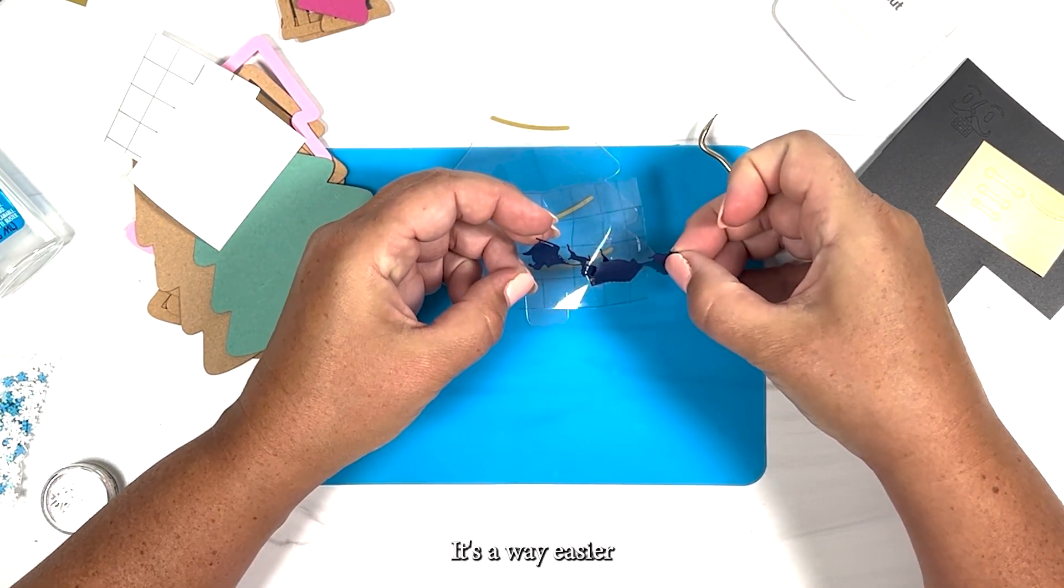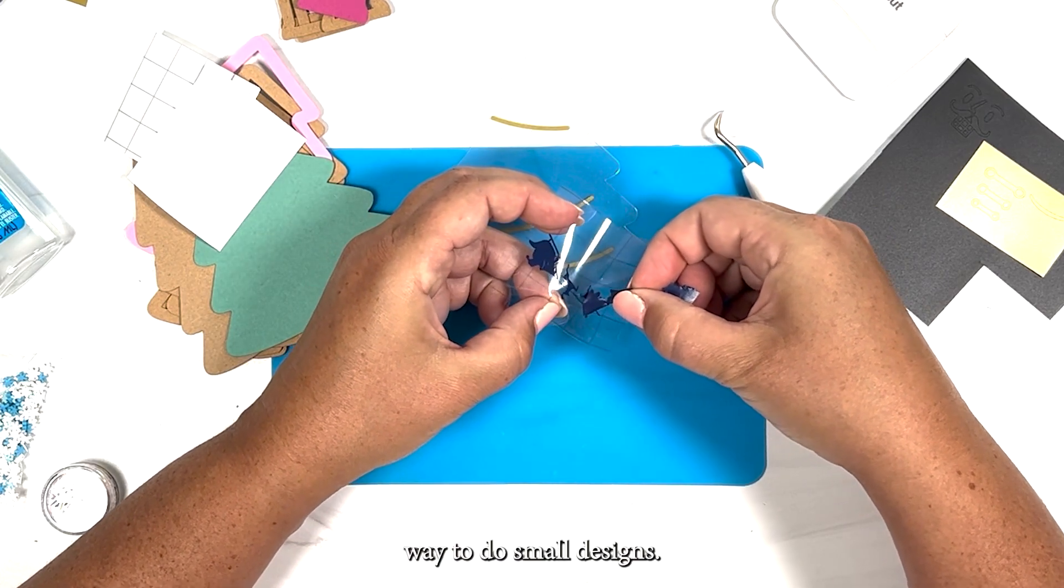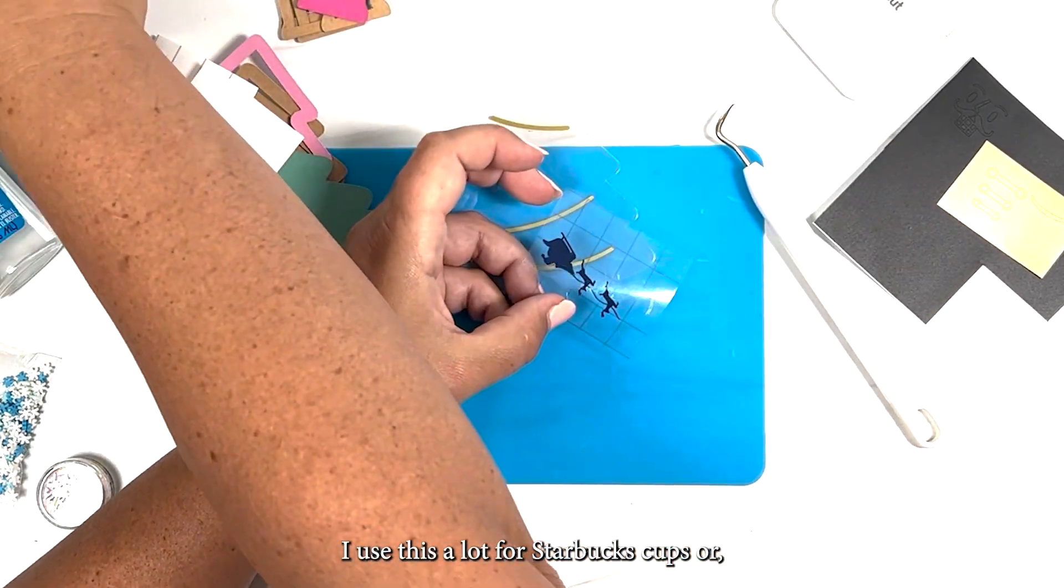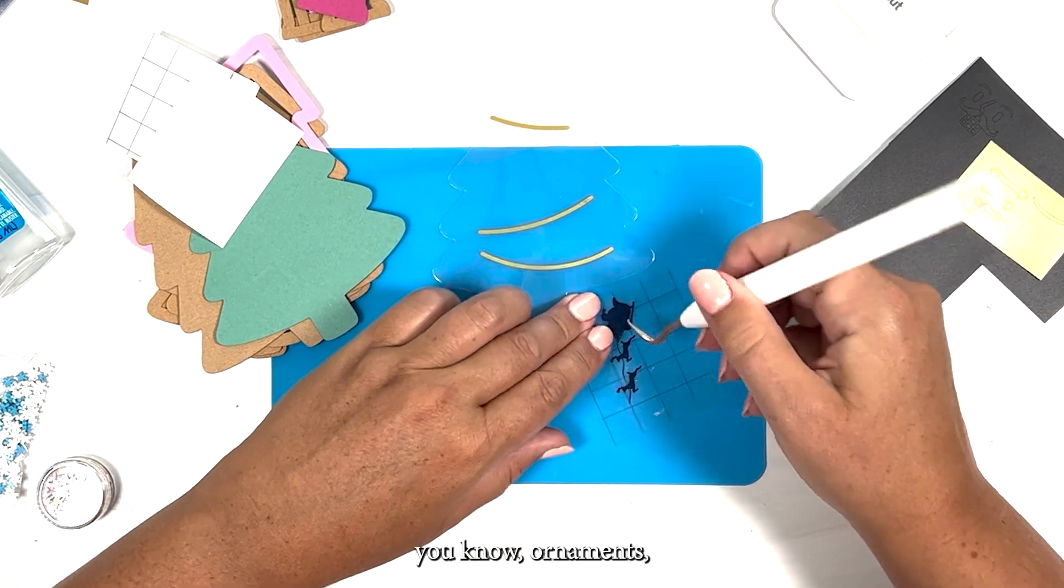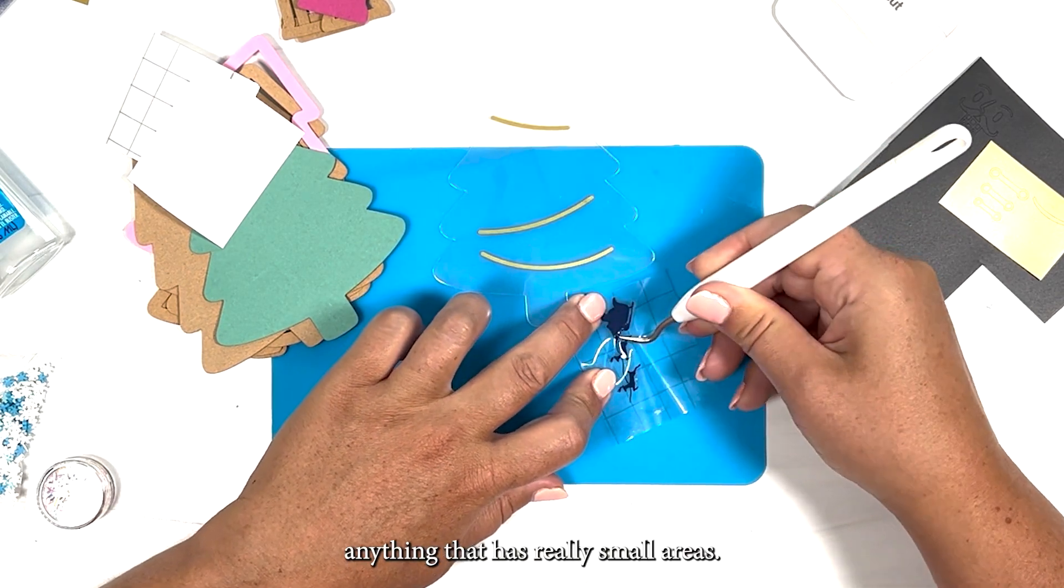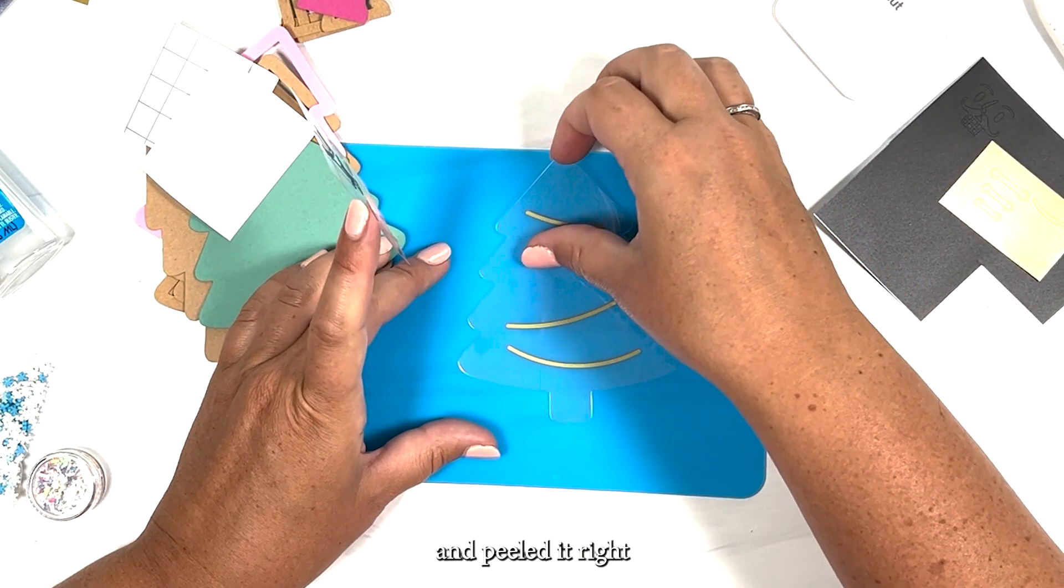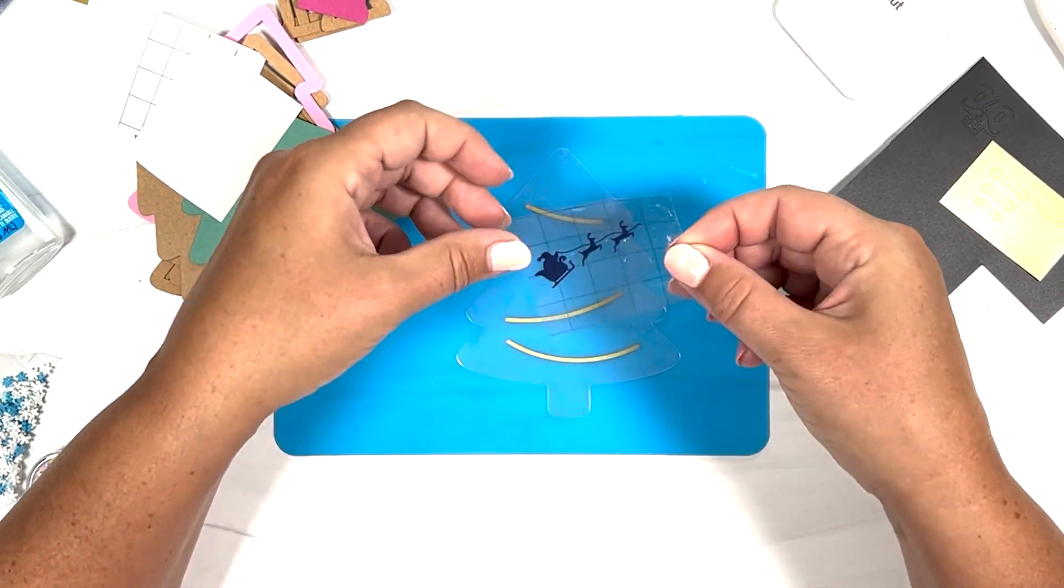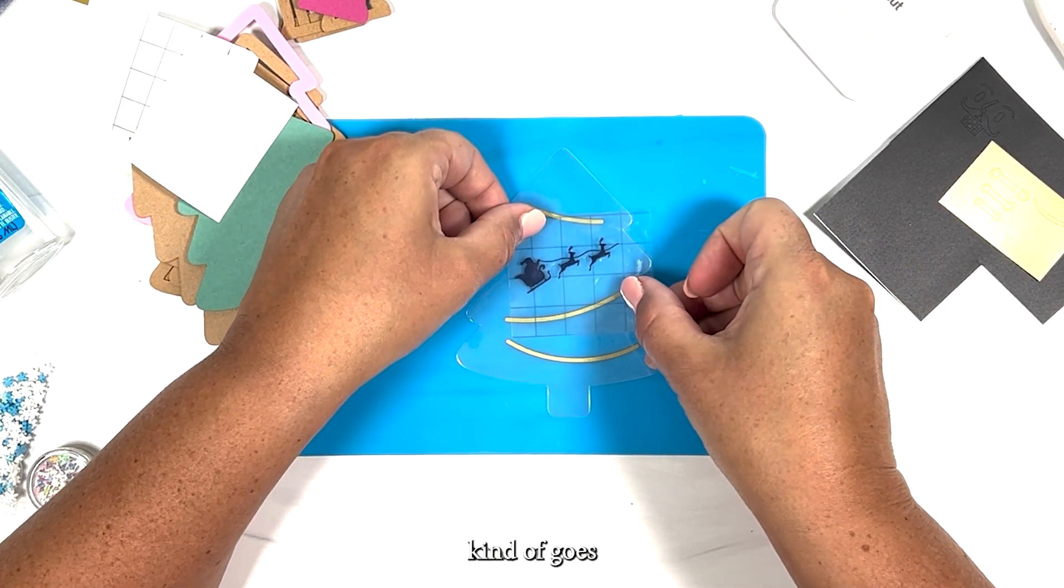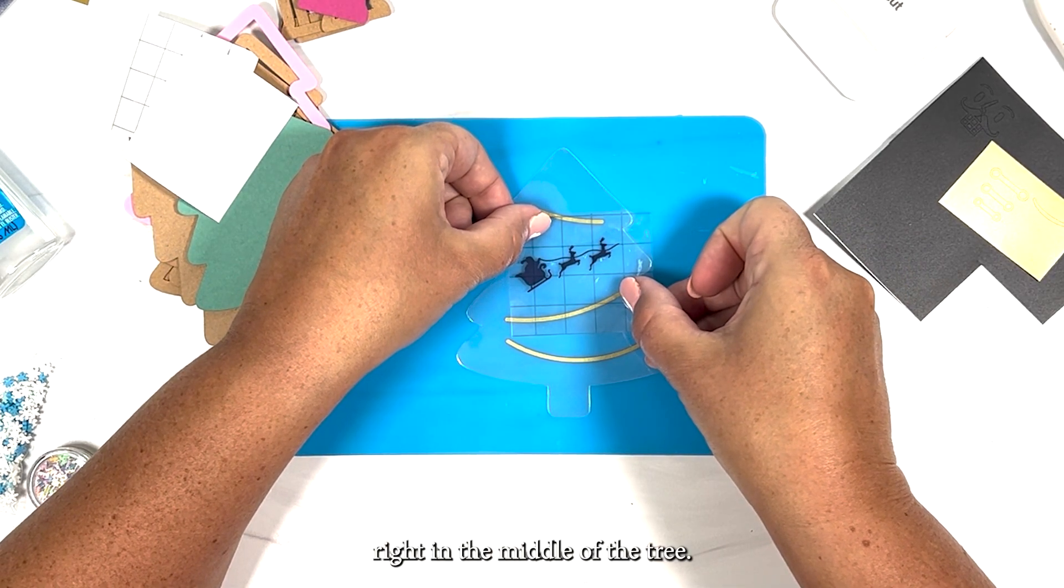For me it's a way easier way to do small designs. I use this a lot for Starbucks cups or ornaments, anything that has really small areas. And you can see there was another little piece cut there. I just went in and peeled it right out with my weeding tool. So this Santa and reindeer kind of goes right in the middle of the tree.